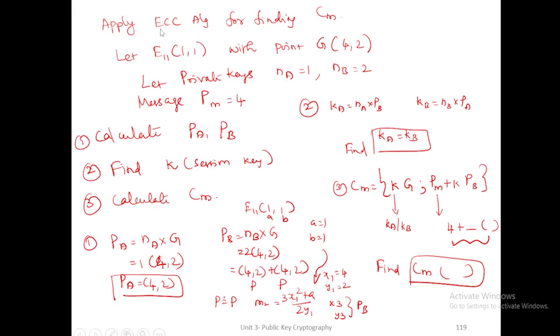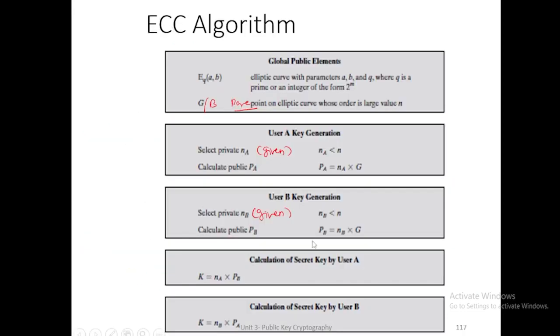Let us take the elliptical cryptography algorithm. They will give Eq(a,b), base point value, na and nb. For calculation of pa, pa is equal to na into g. pb is equal to nb into g.